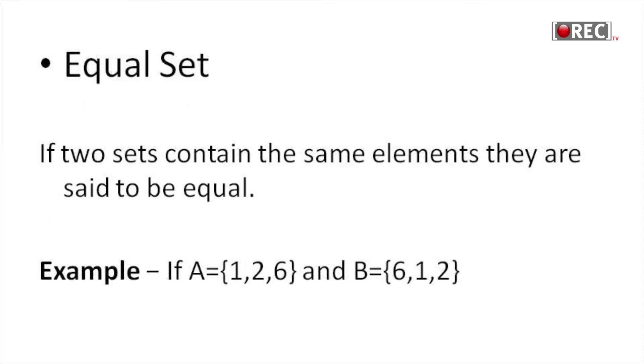Equal set: If two sets contain the same elements, they are said to be equal. For example, A equals 1, 2, 6 and B equals 6, 1, 2. Here, three elements are in each set. Every element of set A is an element of set B and every element of set B is an element of set A. So both are equal sets.